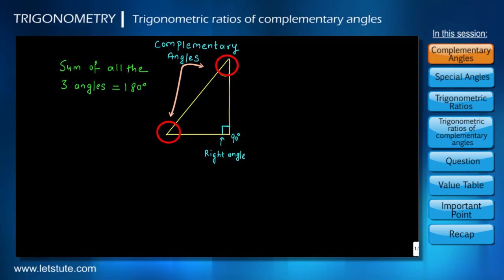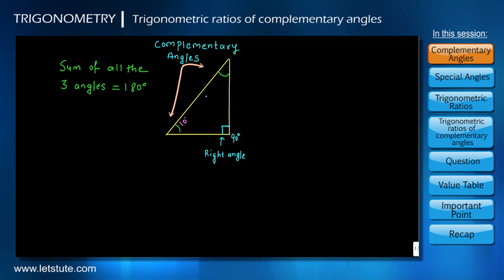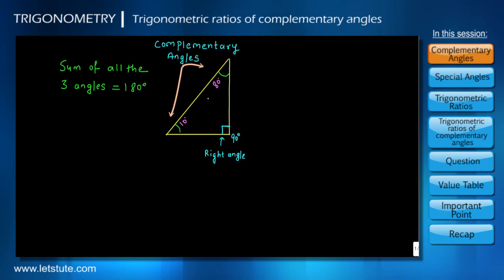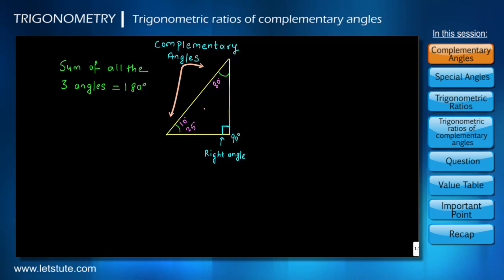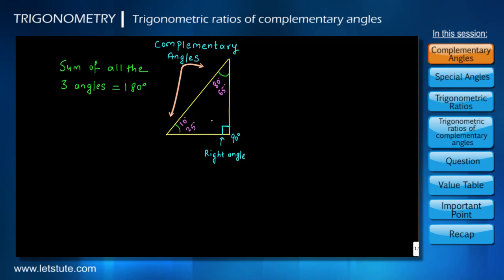So when the measure of one angle is 10 degrees, the other will be 80 degrees. When one angle is 25 degrees, the other will be 65 degrees, and so on.